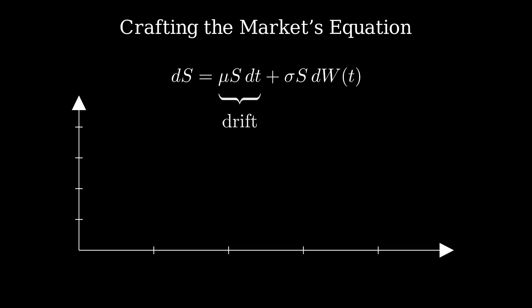Here we mark the drift term, μSdt. It's the stock's steady climb, like compound interest in a bull market.